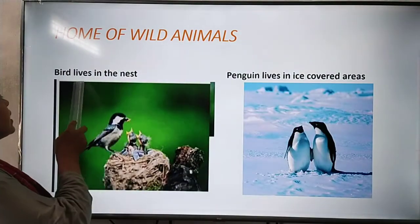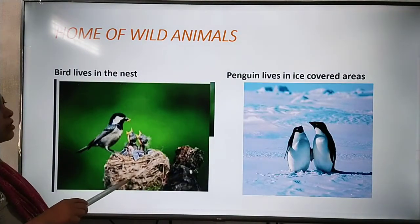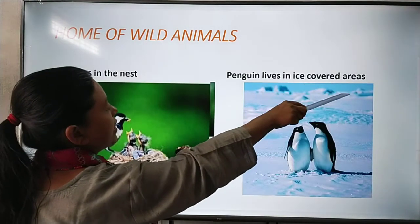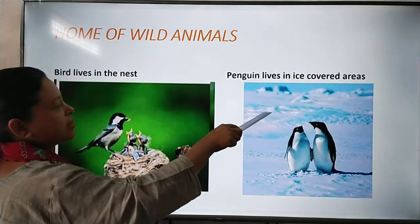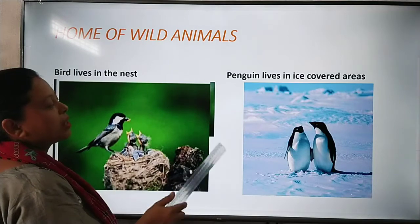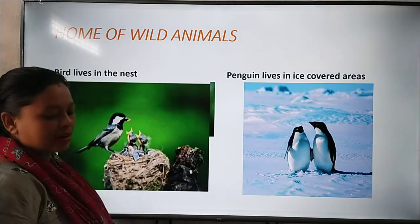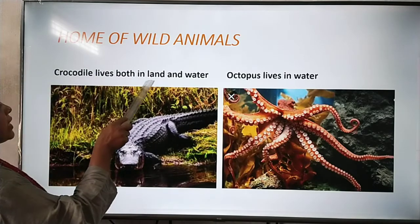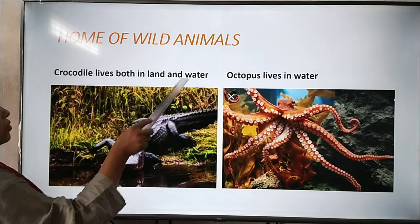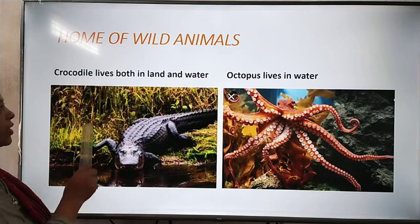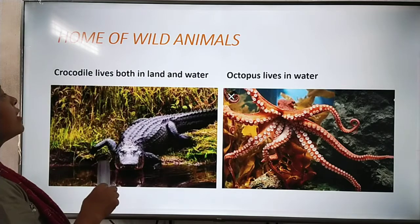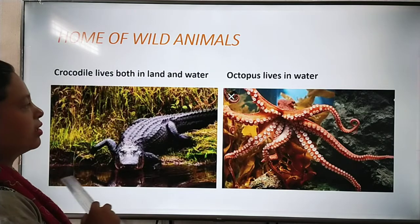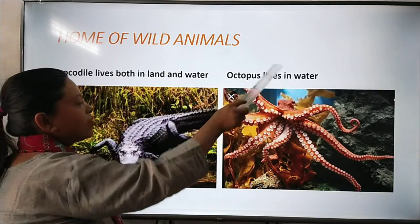Birds live in nests. Penguin lives in an ice-covered area — this is the ice-covered area where only penguins can survive. Crocodile lives both on land and in water. Octopus lives in water.